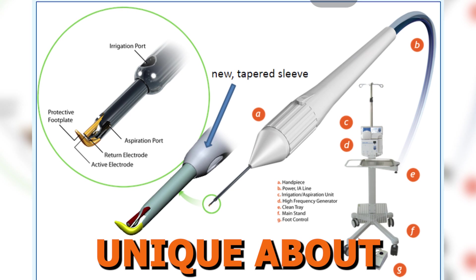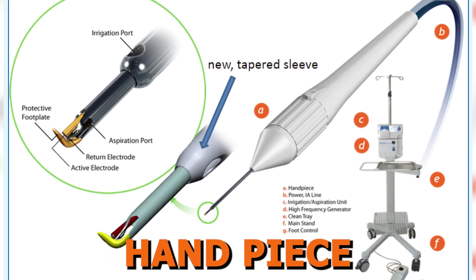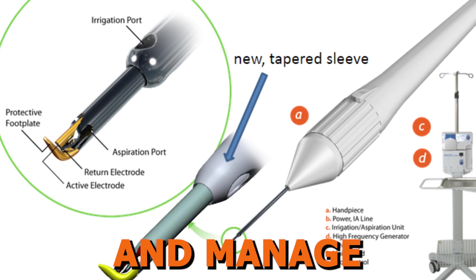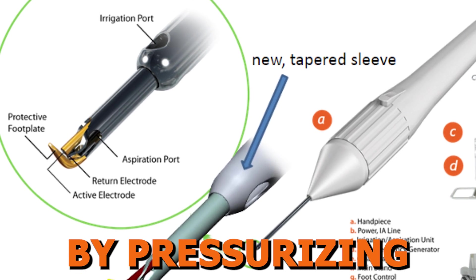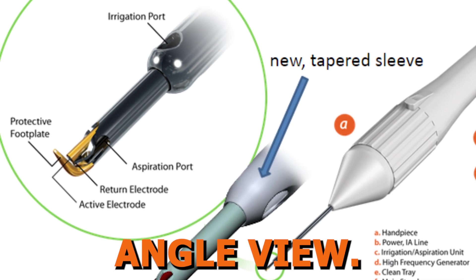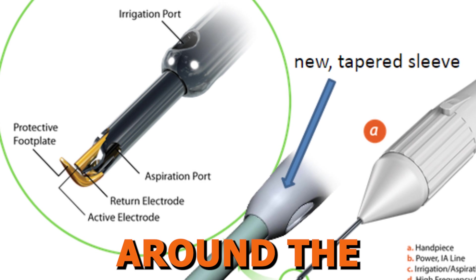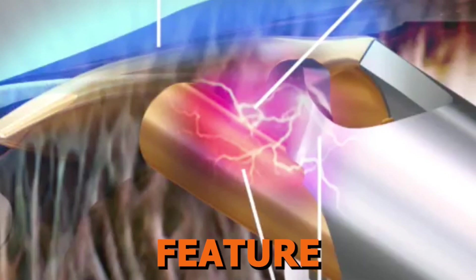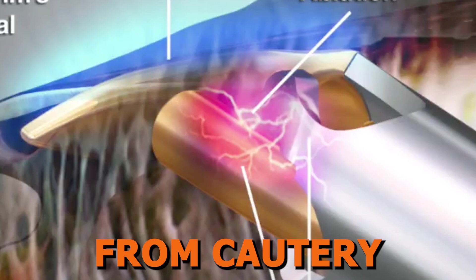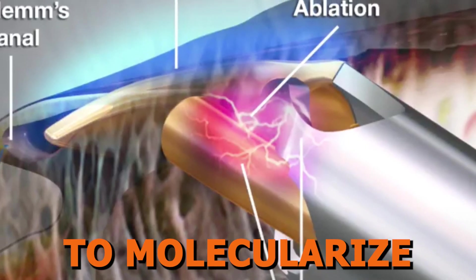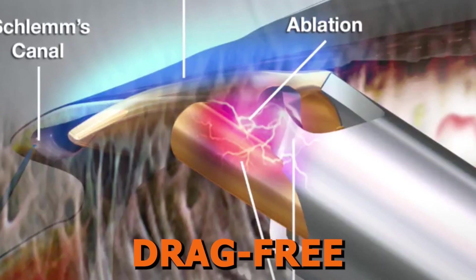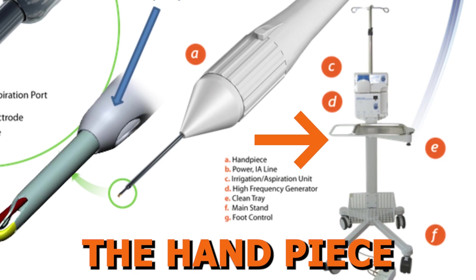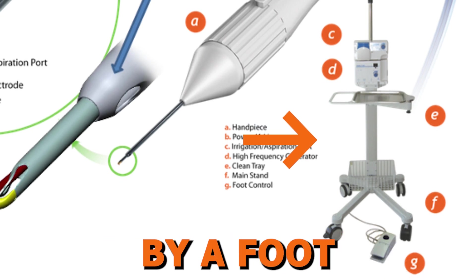First up we have the Trabectome. What is unique about this device is that it is not just a handpiece, but an electrofluidic unit. The handpiece has built-in irrigation and aspiration, which helps clear debris and manage intraoperative blood reflux by pressurizing the anterior chamber, allowing for a clear angle view. Its rounded heel allows for precision control around the curvature of the eye while providing thermal protection to the collector channels. There is a key feature at the tip with an active and return electrode — different from cautery — that generates plasma to molecularize the trabecular meshwork and remove it drag-free with minimal thermal effect. This ablation re-opens the natural aqueous outflow passageway, and the handpiece is connected to the electrofluidic unit controlled by a foot pedal.